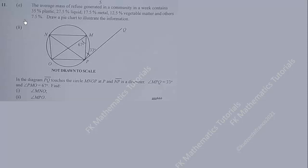The question involves the average mass of refuse generated in a community, which contains 35% plastic, 27.5% liquid, 17.5% metal, 12.5% vegetable matter, and 7.5% others. We need to draw a pie chart to illustrate this information. To do that, we need to calculate the corresponding angles for each sector.